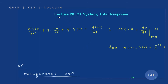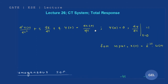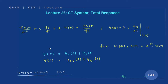Welcome to lecture number 26 on continuous time systems. We are going to start with the total response. In previous examples we studied forced response and natural response. Now we are going to find the complete solution from our standard method — that is yh(t) plus yp(t), the homogeneous and particular solution — and again find y(t) from the signal system method using zero-state response and zero-input response.